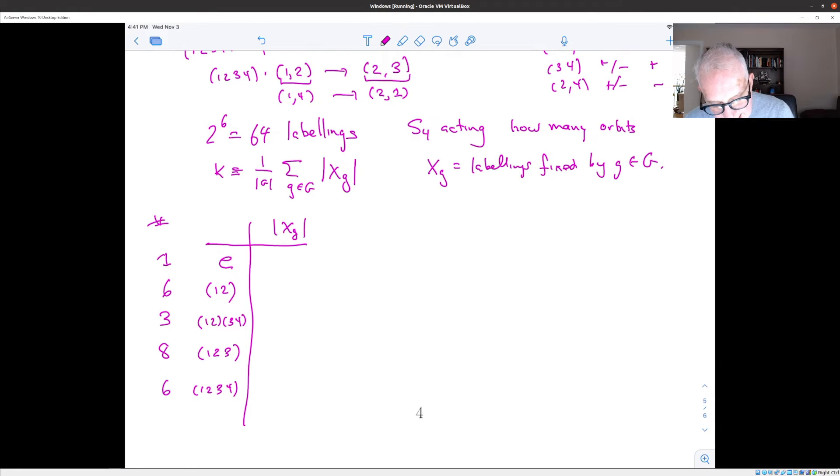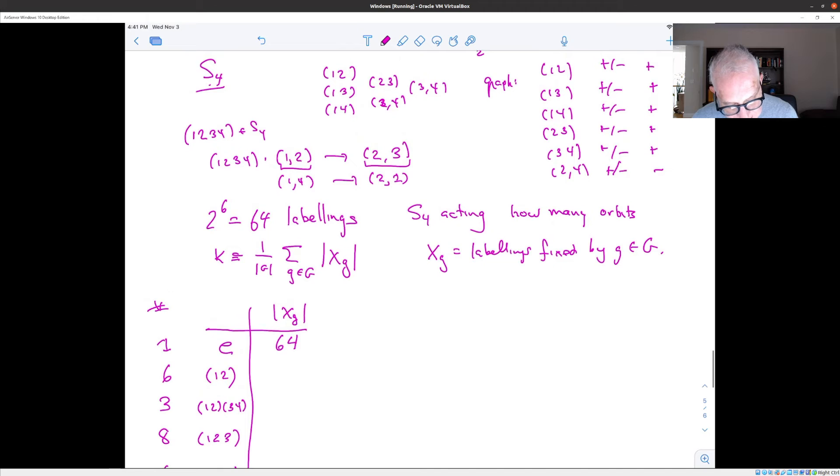And what we want to compute here is the number of labelings fixed by the identity. So for E, for the identity element, the answer is 64. All possible labelings are fixed by the identity element. What about 12? So how do we see this? Well, if we look at the possible edges, let's make a little table here. There is 12, 23, 34, 13, 14, and 24. These are the six possible edges, which can be assigned a plus or a minus.